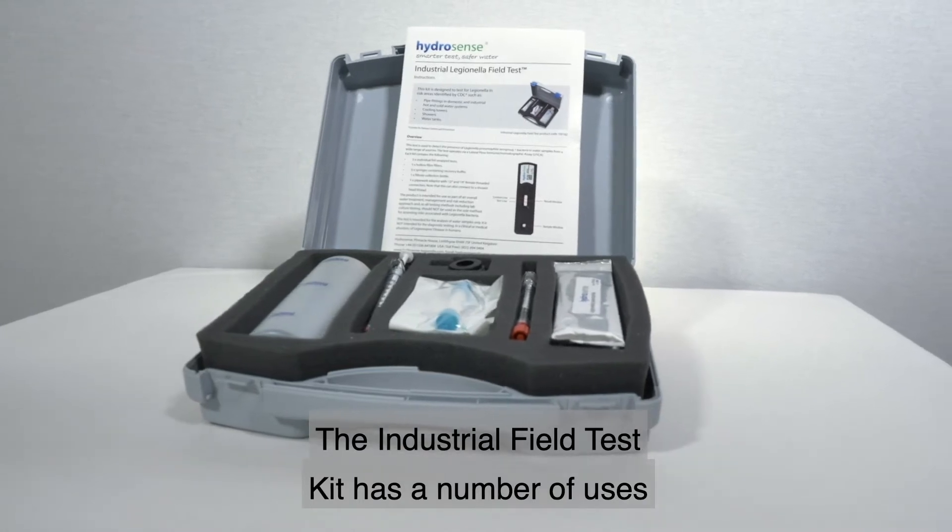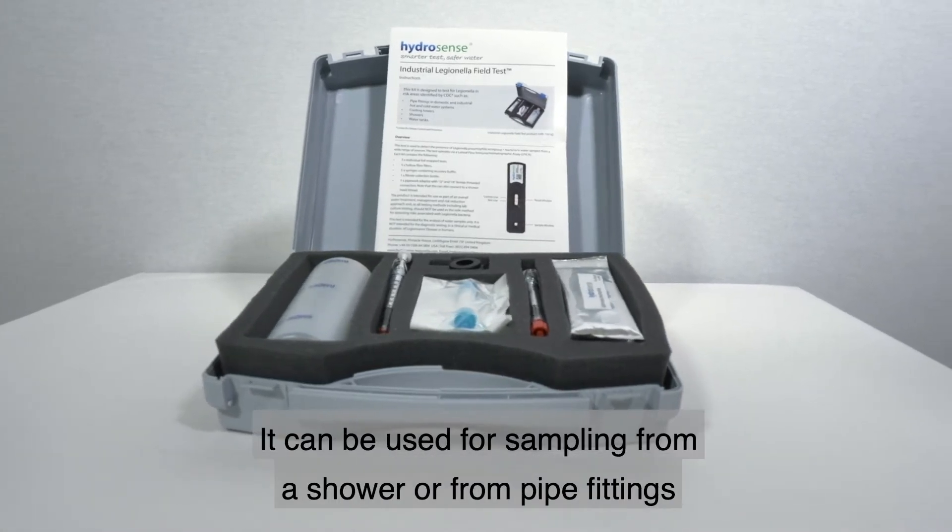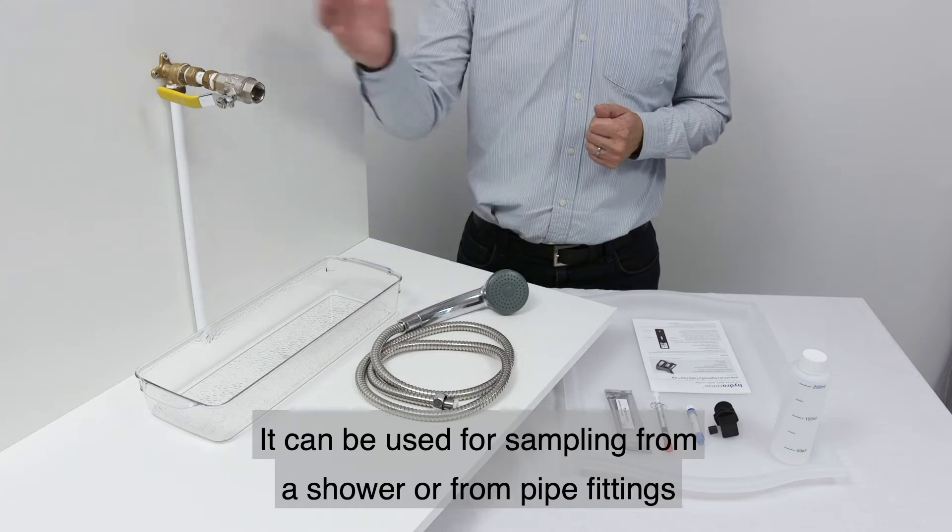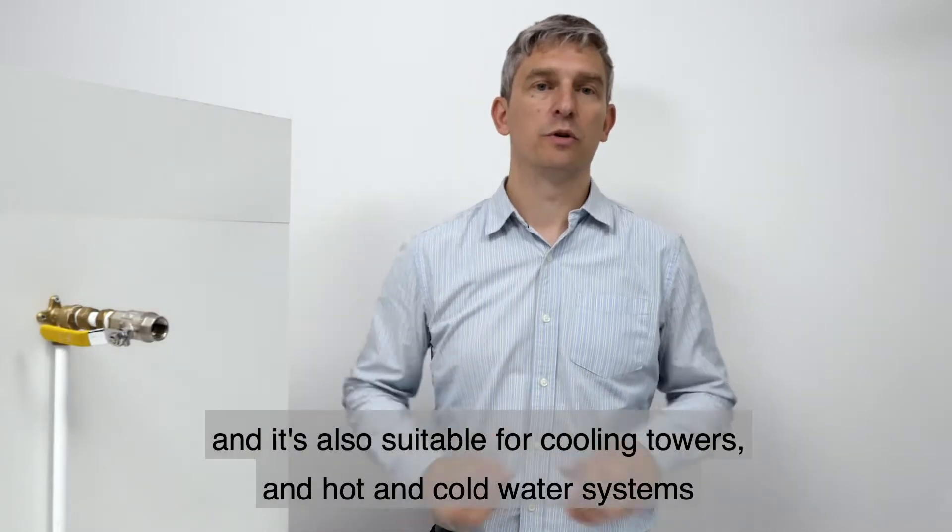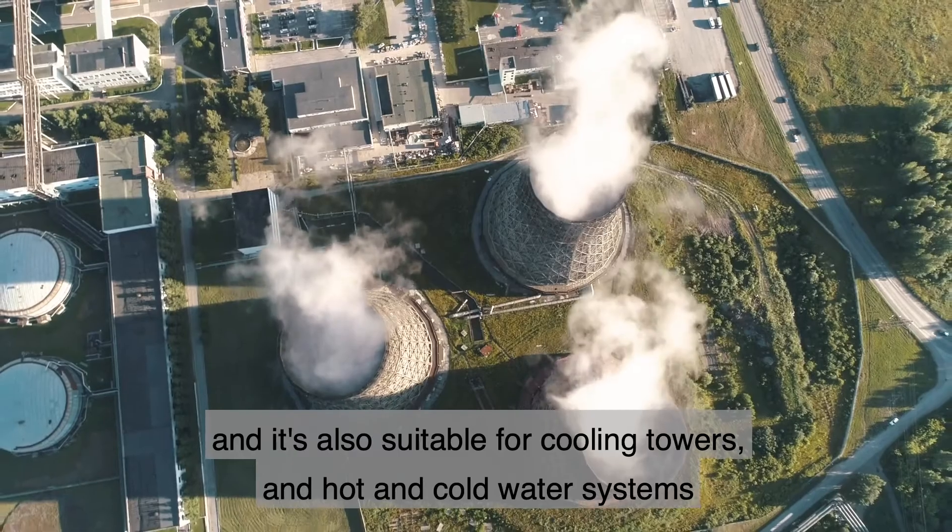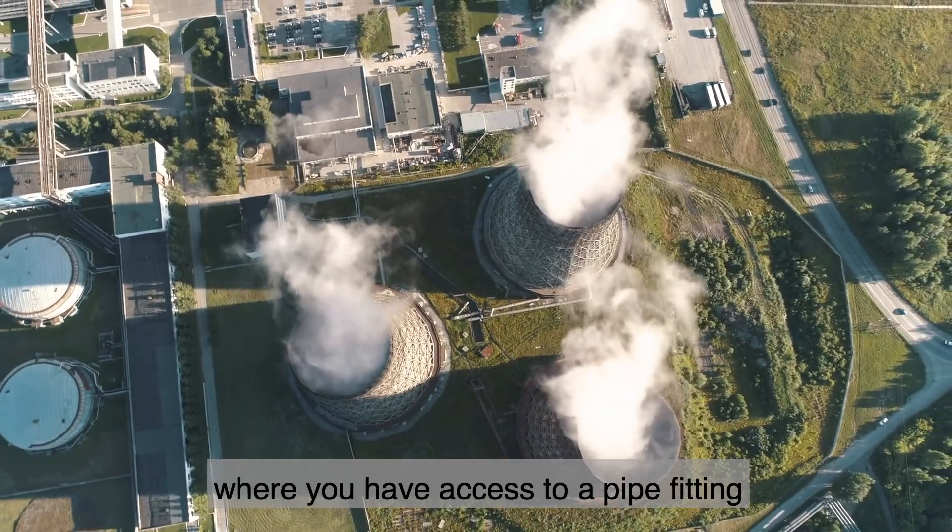Now the industrial field test kit has a number of uses. They can be used for sampling from a shower or from pipe fittings, and it's also suitable for cooling towers and hot and cold water systems where you have access to a pipe fitting.